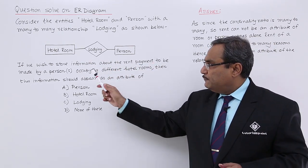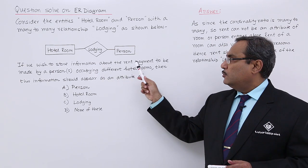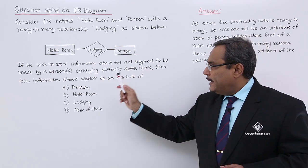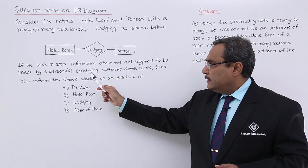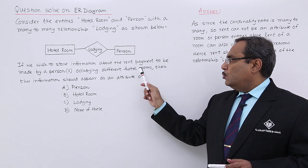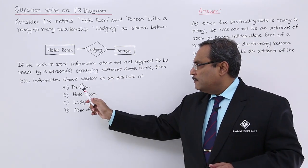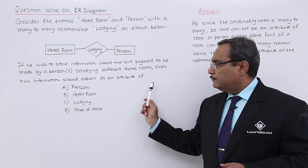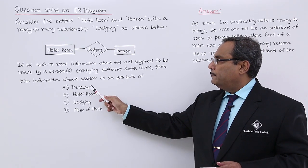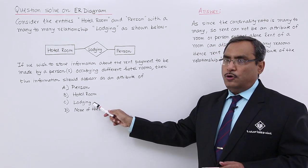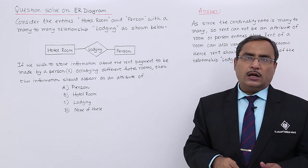Now the question is that if we wish to store information about the rent payment to be made by persons occupying different hotel rooms, then this information should appear as an attribute of either person, hotel room, lodging, or none of the above.